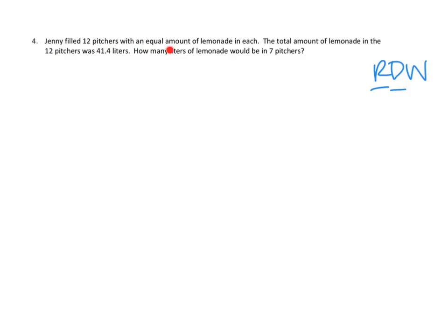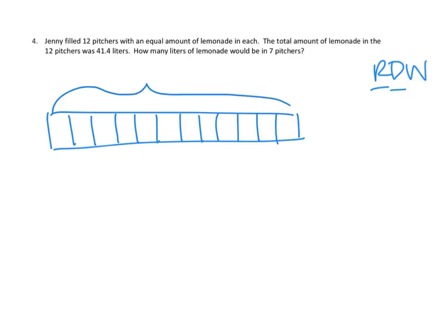Let's go ahead and do the reading. Jenny filled 12 pitchers with an equal amount of lemonade in each. The total amount of lemonade in the 12 pitchers was 41.4 liters. How many liters of lemonade would be in seven pitchers? Boy, oh boy. What a mouthful. Let's just start at the beginning here. Jenny filled 12 pitchers with an equal amount of lemonade in each. So, I'm going to do a tape diagram, I think. A tape diagram that has 12 parts. Let me count those up. 1, 2, 3, 4, 5, 6, 7, 8, 9, 10, 11, 12 parts.